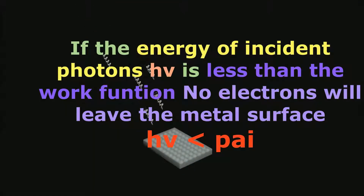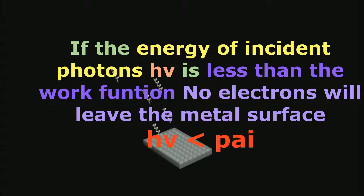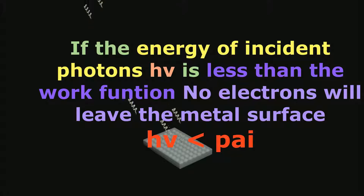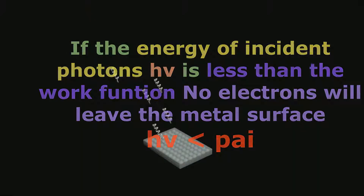If the energy of the incident photon hν is less than the work function, no electron will leave the metal surface and there will be no photoelectric effect. In this case, the incident photon energy is absorbed by the metal surface.